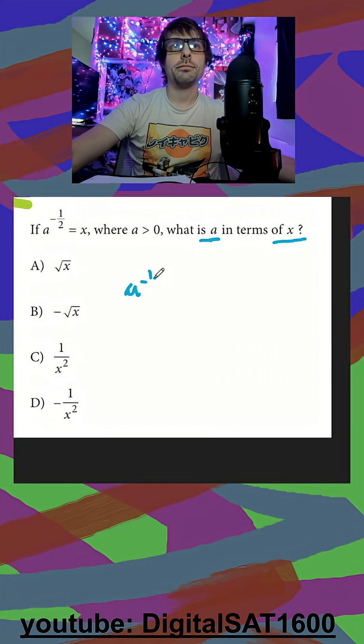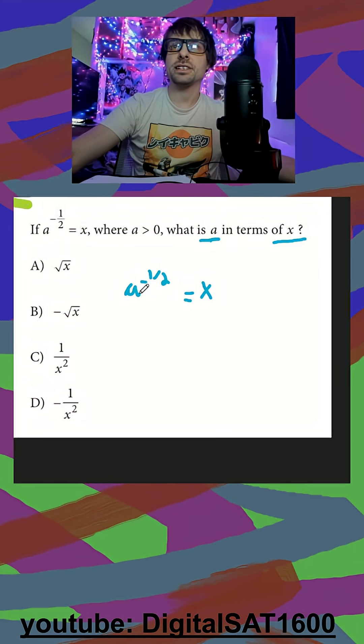So a to the negative one, or just negative exponents in general, they want to go to the opposite side of the fraction they're in. So I'll just do my denominator of one. And what this flips to is one over a to the positive one-half is equal to x.